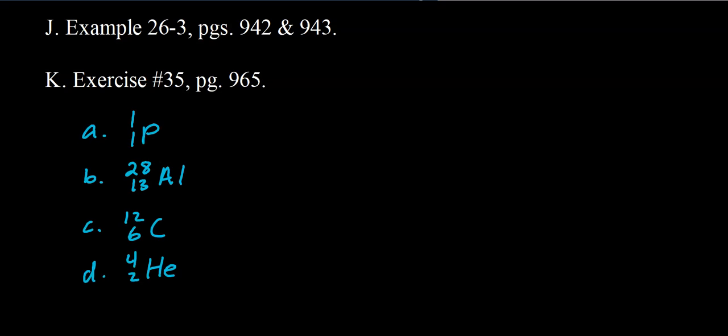For the balancing exercises: if you bombard a magnesium nucleus with a proton, you make an aluminum nucleus and emit one neutron. If you bombard aluminum-28 with a proton (1 over 1 H), you get silicon-29 and gamma radiation — 0 over 0 gamma is the symbol for a gamma ray. Carbon-12 over 6 C fills in the missing blank for letter C, and 4 over 2 He fills in the blank for letter D.